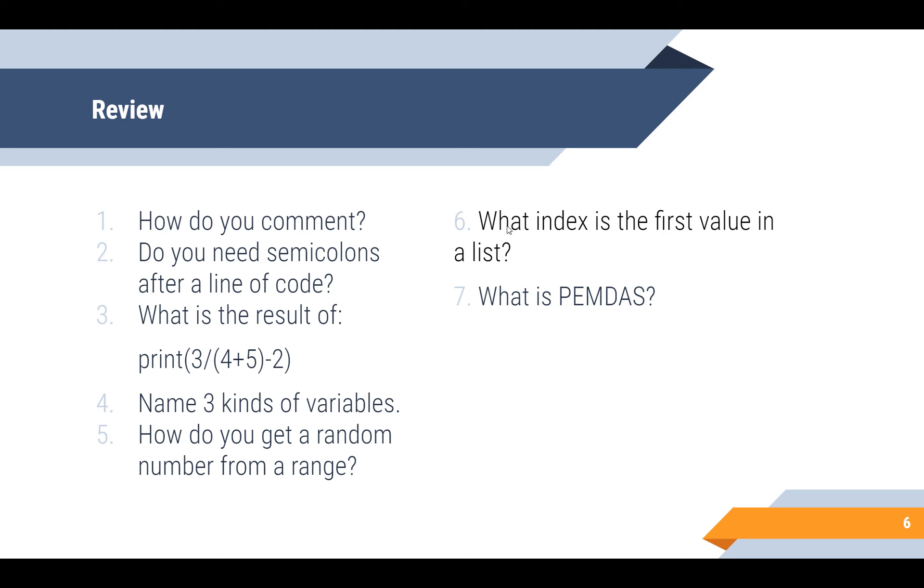So we also have two more. What's the index of the first value? So if you want the first thing in a list, how would you get it? And what is PEMDAS? That's actually kind of related to question three.